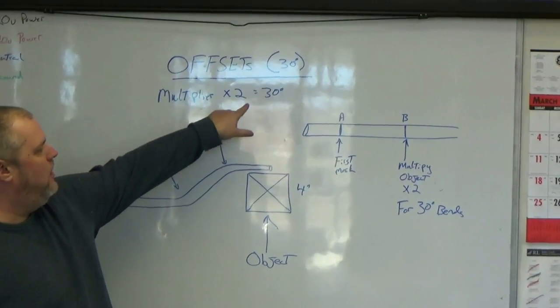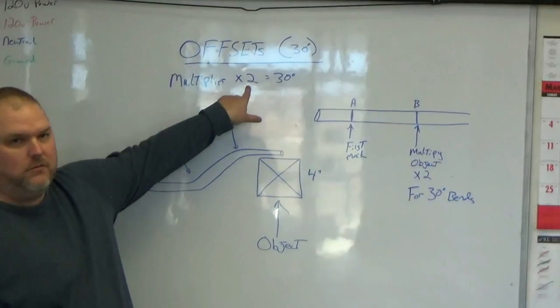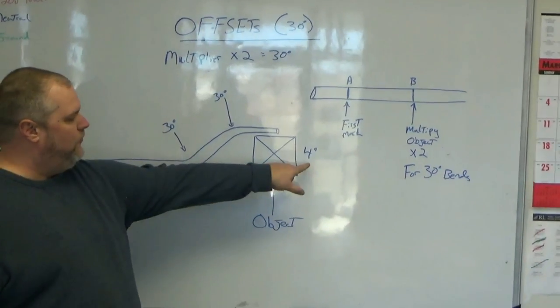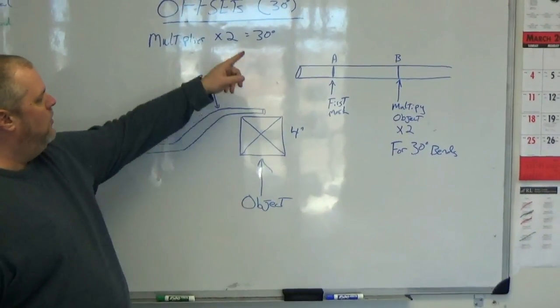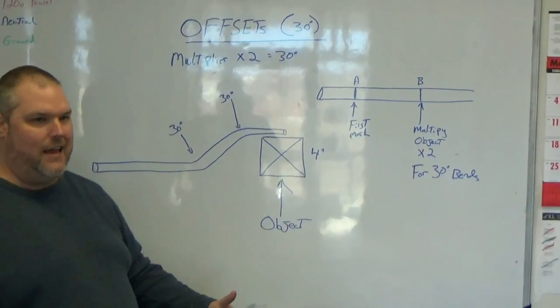Multiplier for a 30 degree offset is two. So if we have a four inch obstruction, we have to multiply the four by the two, which will give us eight.